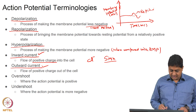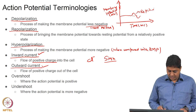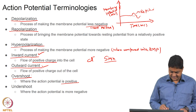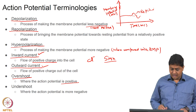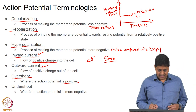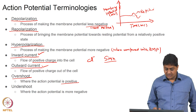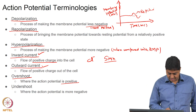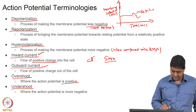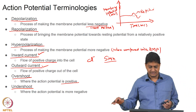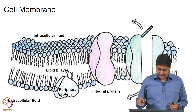The period during which the action potential is positive is called an overshoot, and the period during which the action potential is more negative than the resting membrane potential is called an undershoot. These are terminologies we will be using in this class and in future classes.